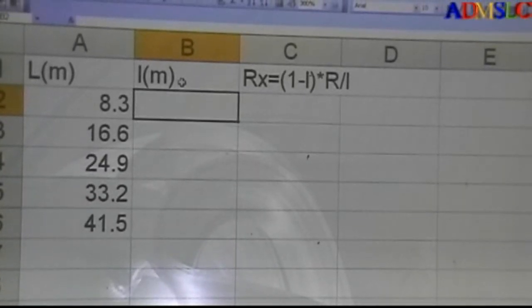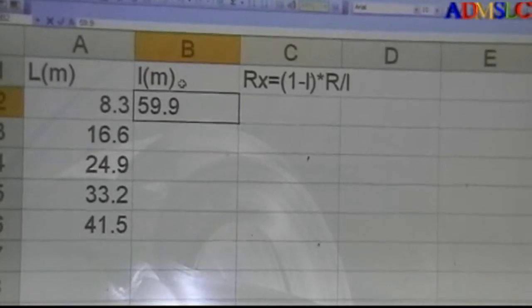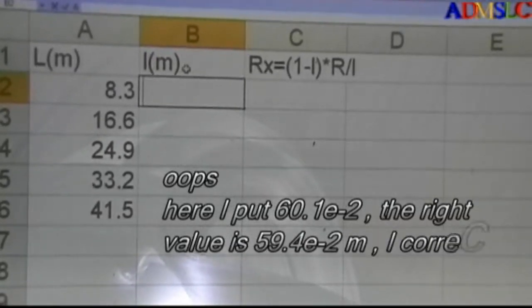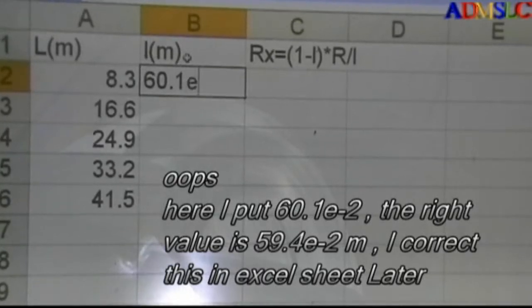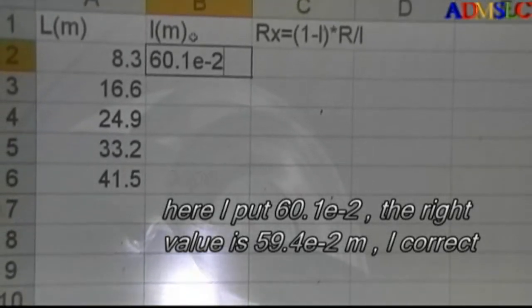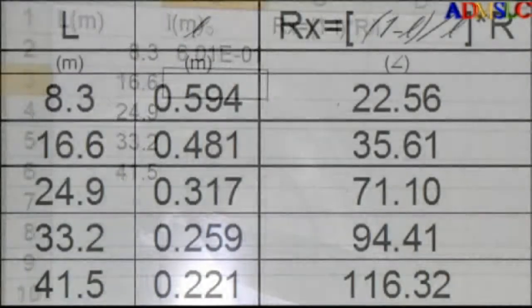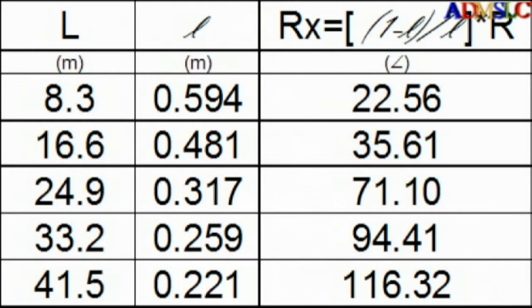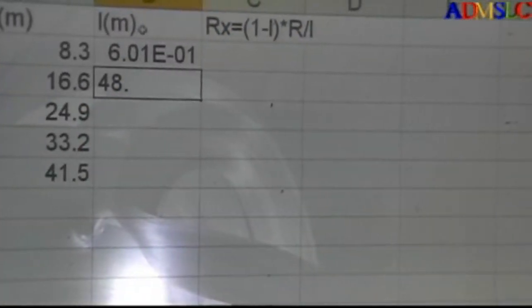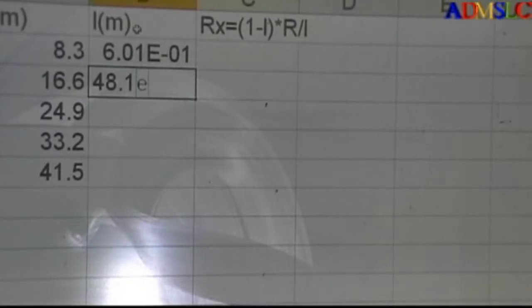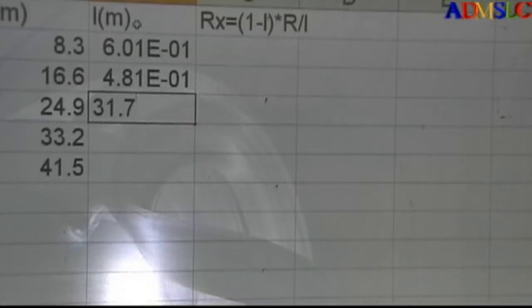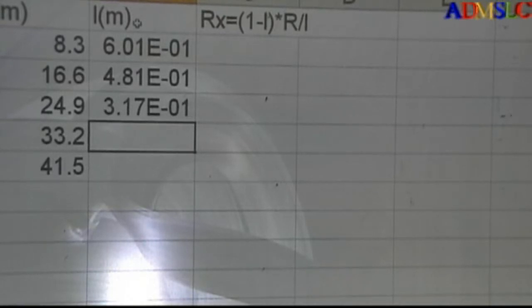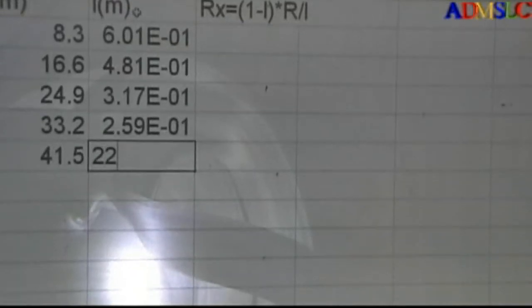The other small l that I got, it's 59.9, let's say 60.1, right. We got it first. It's almost the same. Okay, 60.1 e to minus 2, because this I have to calculate in centimeters. And this is 48.1 e minus 2, and here 31.7 e minus 2, and here 25.9 e minus 2, and here I have 22.1 e minus 2.